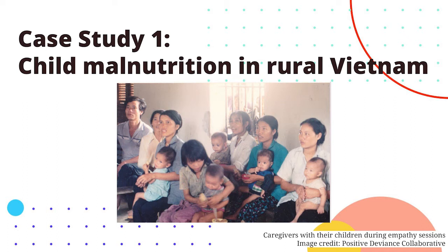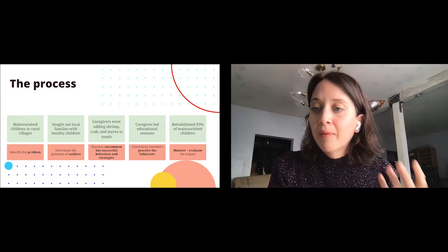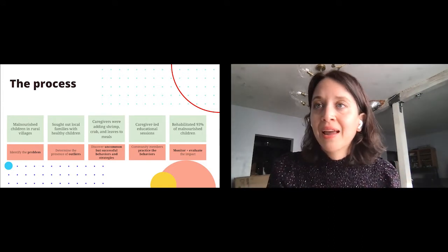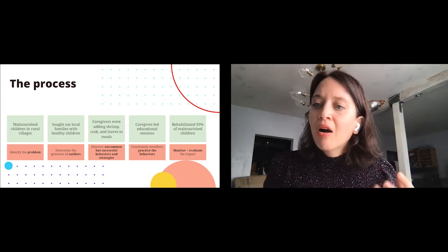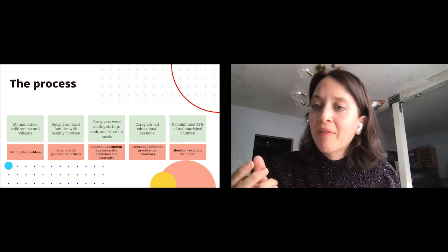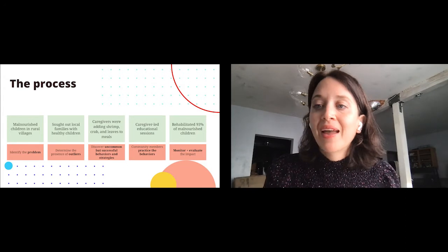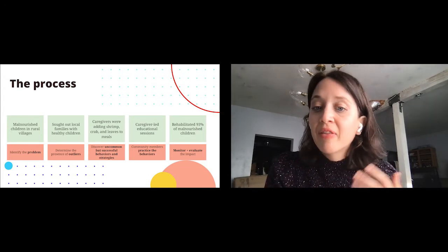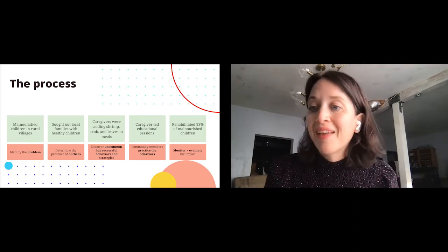The Sternens and a ground team of local Vietnamese community members made up the design team. They had already identified the problem — the two-thirds population of malnourished children. So they asked: how can we identify this presence of outliers? They began talking to people in the community and asking, 'Are there any families here whose children are healthy?' Not focusing on the malnourished families, but asking: where are children who are already healthy within this same community? And there were such families. So they went and talked to those families, sat with them, observed them, and discovered what those outlier behaviors and bright spot strategies were that enabled them to succeed given no additional resources.